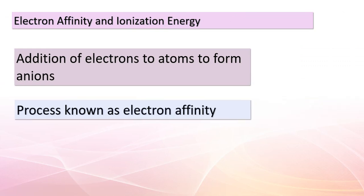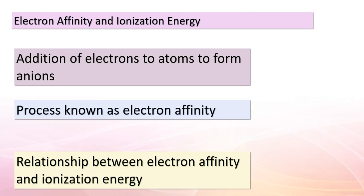Welcome, dear students, to an exciting segment where we'll unravel the concepts of electron affinity and ionization energy. These topics build upon our previous exploration of ionization of atoms. Today, we're delving into the process of adding electrons to atoms, leading to the creation of anions — a phenomenon called electron affinity. We're also going to uncover the intricate connection between electron affinity and ionization energy, and how irregularities in periodic trends of electron affinity can be linked to the electron configuration of atoms.